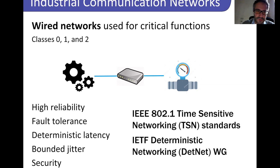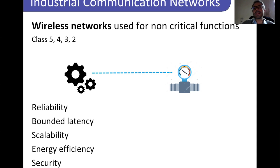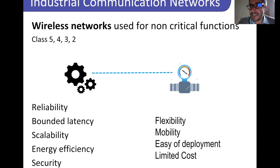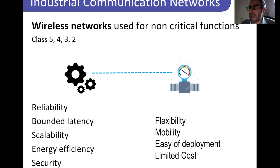Wireless counterparts in industrial environments are used for applications that can tolerate some loss and latency — non-critical functions in classes 2, 3, 4, and 5. Even though wireless networks are generally less reliable, there are standards that can provide reliable communication, bounded latency, scalability, energy efficiency, and security. Wireless networks, every time they can be used, provide big advantages: reduced deployment time, mobility support, flexibility, and limited costs.